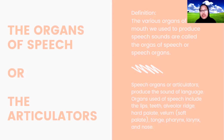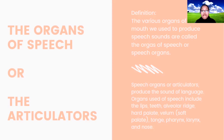Speech organs or articulators produce the sound of language. Organs used for speech include lips, teeth, alveolar ridge, hard palate, velum or soft palate, tongue, pharynx, larynx, and nose.